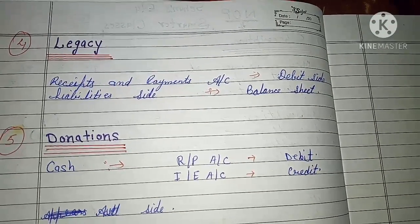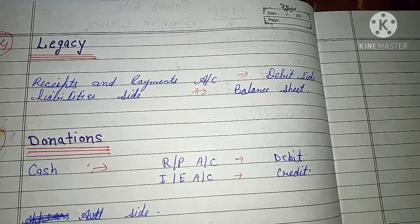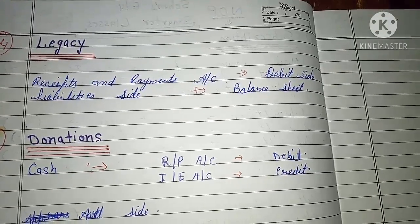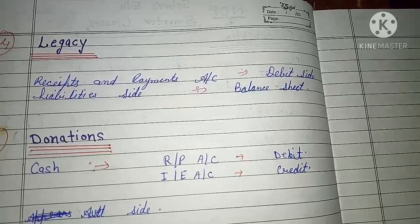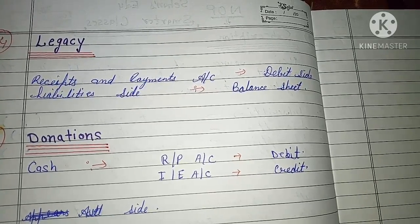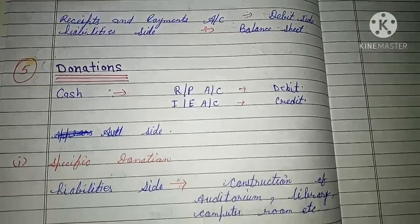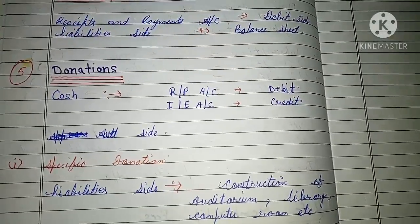We record legacy on the debit side of the payment account and the liability side of the balance sheet. Next we have donations.